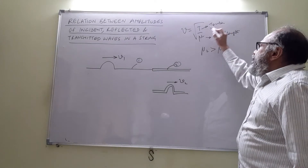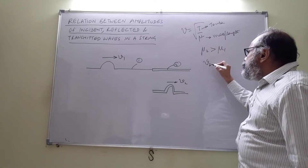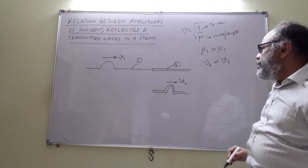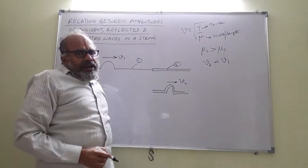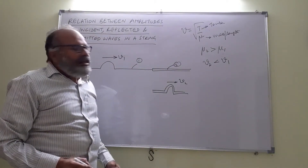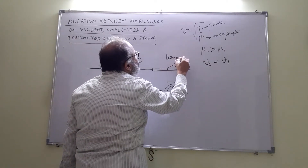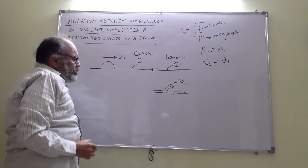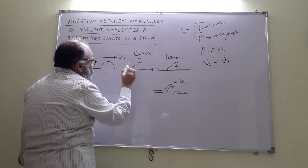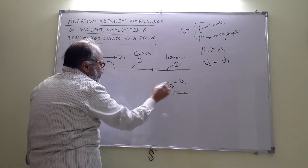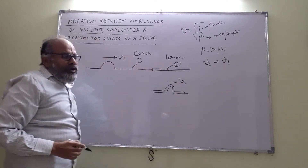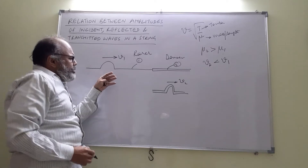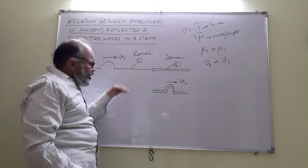Since T is the same, the velocity v2 in the second string would be less than the velocity v1 in the first string. Whenever the velocity of a wave is less, we say that it is a denser medium. So the second string would be a denser medium and the first would be a rarer medium. The speeds are different in the rarer medium and the denser medium — v2 is less than v1. An interesting thing happens: the reflected wave gets inverted.